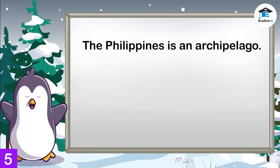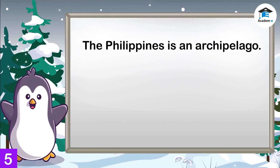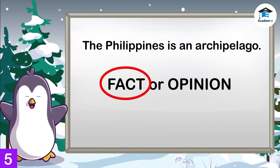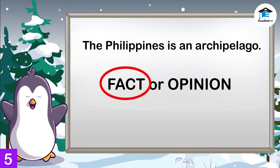From the given dialogue, let's find out which statement is a fact and which is an opinion. 'The Philippines is an archipelago.' — This is a fact because the Philippines has many islands, thus it is an archipelago. The statement can be verified or proven. We can prove it by doing research in books or on the internet.